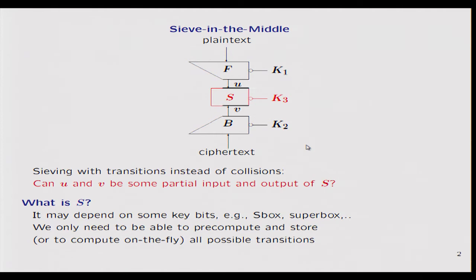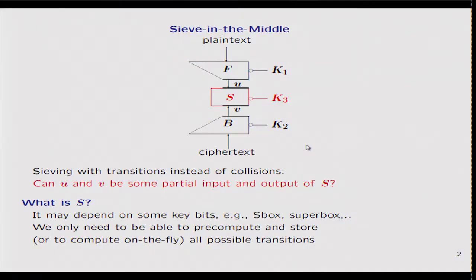Exactly as before, we compute some intermediate value U in the forward direction and some intermediate value V in the backward direction. But now U and V do not correspond to the same part of some intermediate state. Instead, U and V are some input and output bits of some function S. This function S is typically an S-box, but in the classical meet-in-the-middle attack it corresponds to the identity mapping, and it can even depend on some key bits — for instance, it can be a super-box.